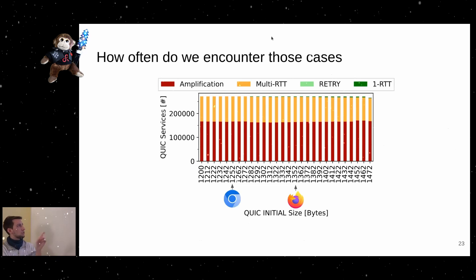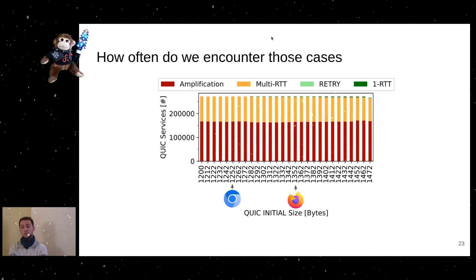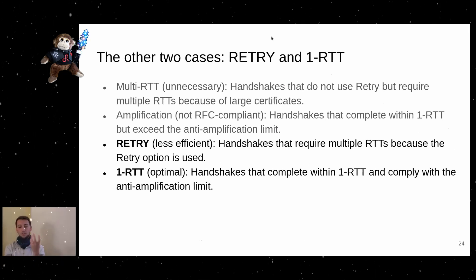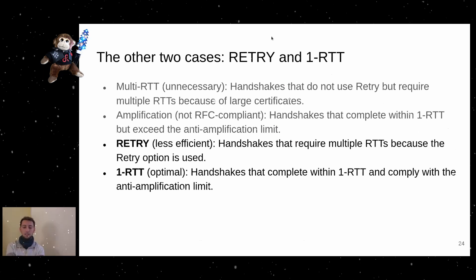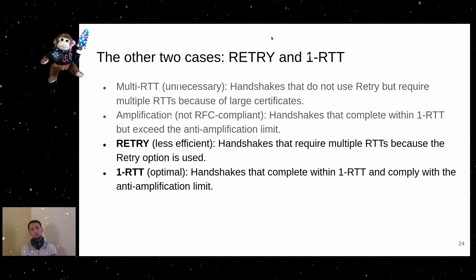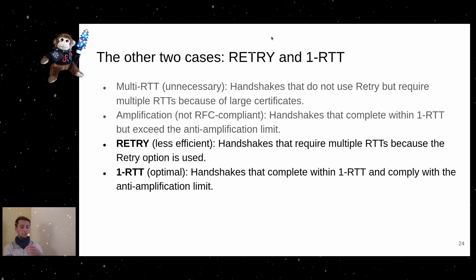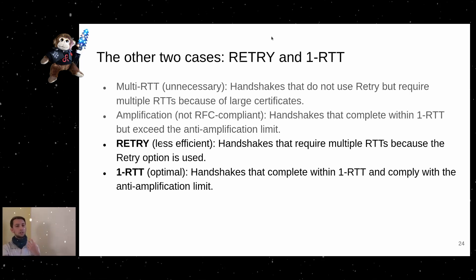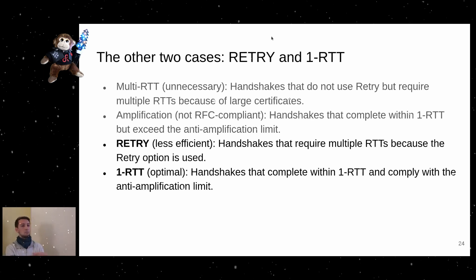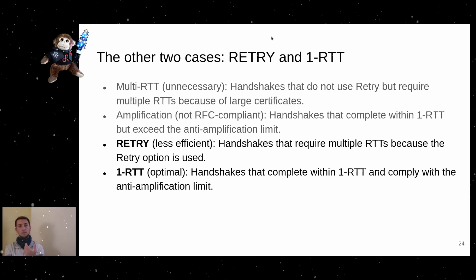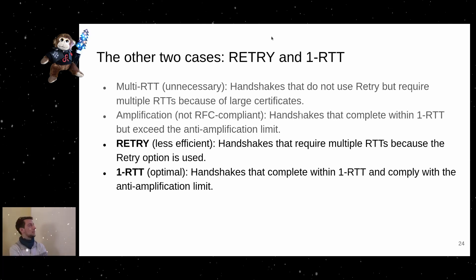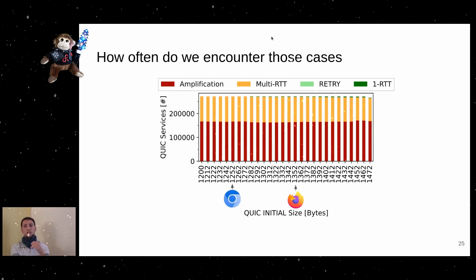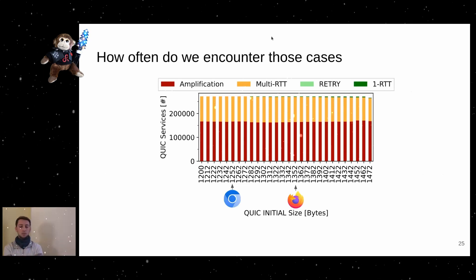There are two additional handshake cases that occur rarely. One is the retry mechanism, a mitigation for DoS attacks: the server sends a retry message and the client must use a token from that message to reconnect, adding one round trip time but avoiding state storage for the initial connection.